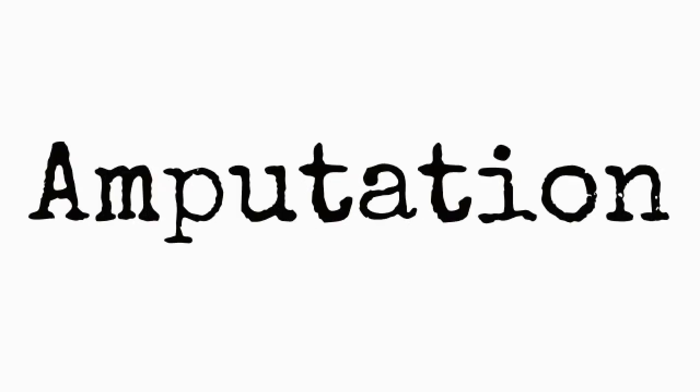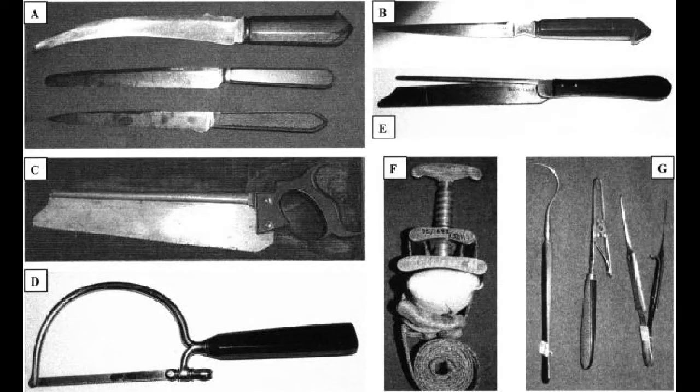Amputation was the most common procedure performed. An assistant surgeon would retract the skin around the limb to be removed, and a circular sweep was made through all layers of the flesh down to the bone. The bone would then be sawed until it was loosened. The ability to remove the limb at a fast pace was the foremost concern of the surgeon.